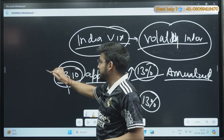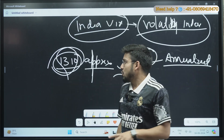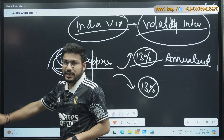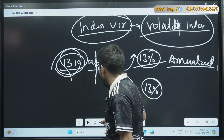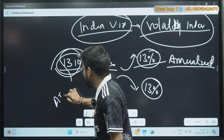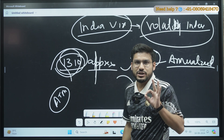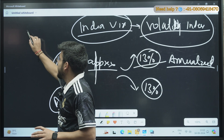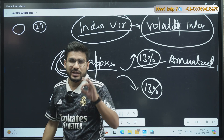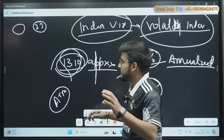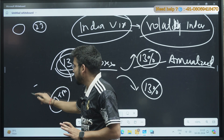Some players also manipulate India VIX. For example, a seller making a position at ATM price just to play with market volatility or create a fake scenario will buy a very low premium at a very deep OTM strike. This will slightly fluctuate the volatility of the index. Many players use this technique.